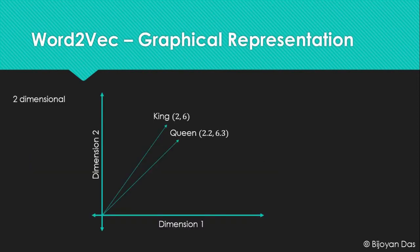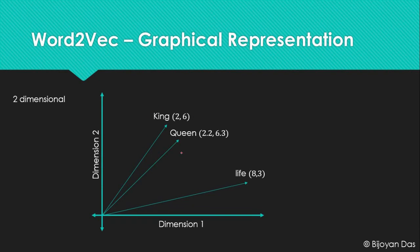Words are represented as vectors of size 32, 100, or 300. Here, let's say each word is represented in two dimensions. The word 'king' has the vector values 2 and 6, and the word 'queen' has the vector values 2.2 and 6.3. The word 'life' has the values 8 and 3. As you can see, king and queen are related to each other, so they appear close together in vector space, whereas 'life' has nothing to do with king and queen and is far away in the vector space.